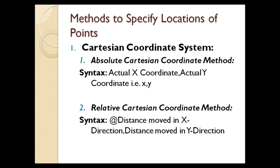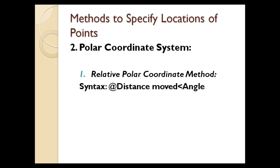Now let us see the polar coordinate system. Under the polar coordinate system, there is a method known as the relative polar coordinate method. The syntax is: at-the-rate, distance moved, less-than symbol, angle. You specify the distance moved with respect to the previous point, and the angle at which you are moving.